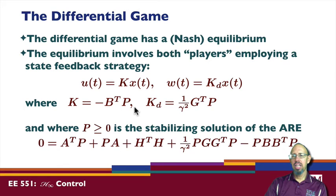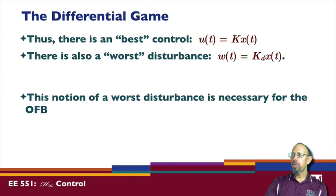And p the p that appears in both of these guys is a solution of the algebraic Riccati equation. Okay and so in this problem we can think of there being a best control or an optimal control and a worst disturbance. Okay and so this notion of a worst disturbance is important and it's necessary for us to understand how to work with the output feedback problem.